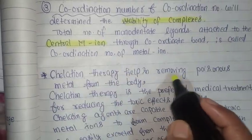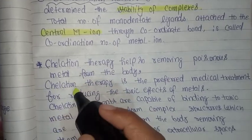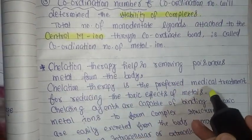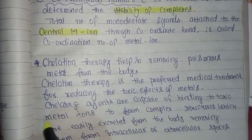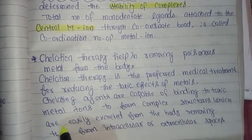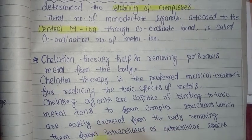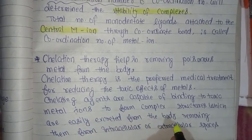Chelation therapy helps in removing poisonous metal from the body. Chelation therapy is a medical treatment for reducing the toxic effects of metals. Chelating agents are capable of binding to toxic metal ions to form complex structures which are easily extracted from the body, removing them from intracellular or extracellular spaces.